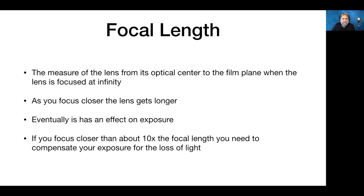Focal length is a measure of the lens when focused at infinity, from the optical center to the film plane. As you focus the lens closer, the lens extends and its focal length increases. Eventually this affects the exposure. If you focus closer than about 10 times the focal length, you need to compensate for the loss of light. Non-macro lenses can only focus to a minimum distance, and below that 10x threshold, light loss isn't compensated for by an external meter.